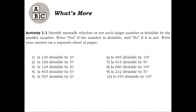What's More? Activity 1.1: Identify mentally whether or not each larger number is divisible by the smaller number. Write yes if the number is divisible, and no if it is not. Write your answer on a separate sheet of paper. Number 1: Is 130 divisible by 2? Answer: yes. Number 2: Is 326 divisible by 5? Answer: no. Number 3: Is 124 divisible by 2? Answer: yes. Number 4: Is 405 divisible by 5? Answer: yes. Number 5: Is 567 divisible by 2? Answer: no.